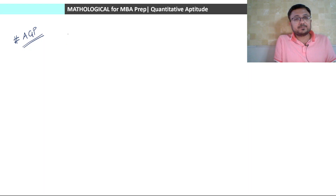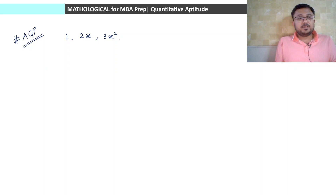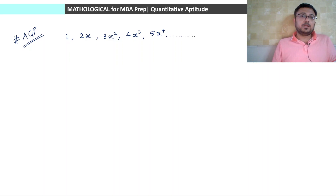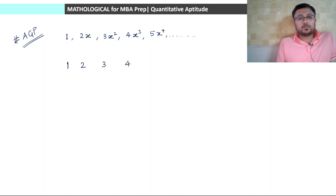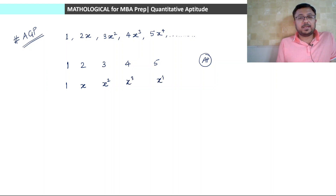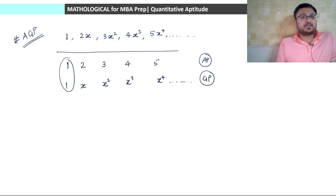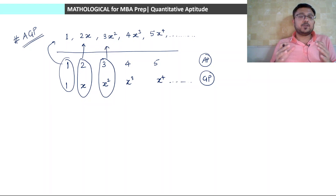Let us say a series is 1, 2x, 3x², 4x³, 5x⁴ and so on. In this series you can observe that the numerical terms 1, 2, 3, 4, 5 are forming an Arithmetic Progression. And the variable terms 1, x, x², x³, x⁴ are forming a GP. So effectively 1×1 is the first term, 2×x is the second term, 3×x² is the third term, and so on. Such a series is called Arithmetic-Geometric Progression — AGP.